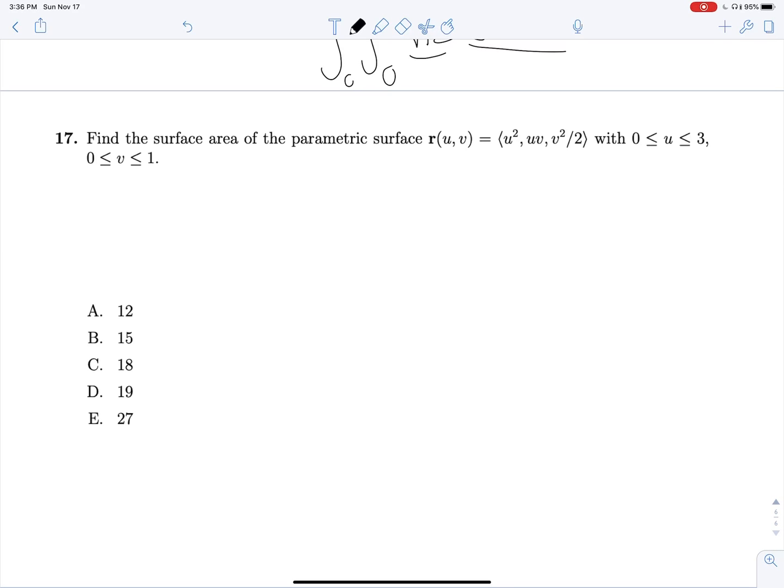And lastly, we are just pretty much doing the same thing. These questions end up being very similar. We need magnitude of RU cross RV, and we need to take, let's just set up our integral just to start off with, 0 to 3, DU, 0 to 1, DV. And we know that RU cross RV magnitude is going in there. RU is going to be 2U, comma, V, comma, 0. And RV is going to be 0, comma, U, comma, V.